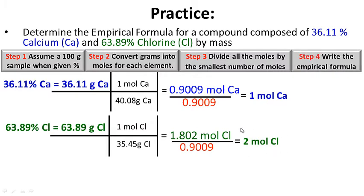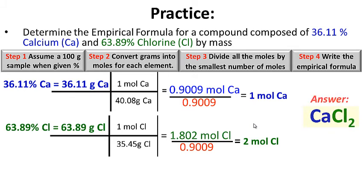Step four: write the empirical formula. We have 1 calcium and 2 chlorine atoms, so the formula is CaCl2 — calcium chloride. Hopefully you did well on that.